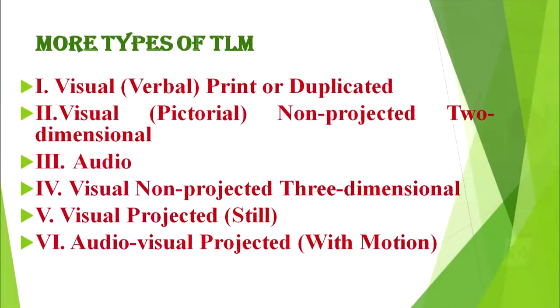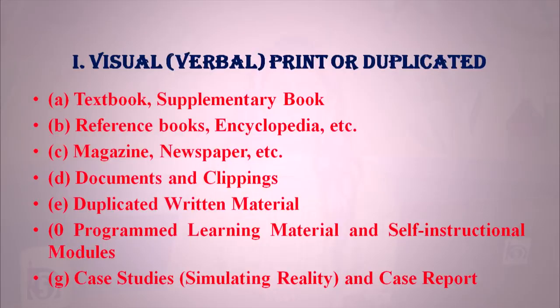There are six types of TLM. First is visual/verbal — print or duplicated; second is visual, pictorial, non-projected, two-dimensional; third is audio; fourth is visual, non-projected, three-dimensional; fifth is visual projective (still); and the last is audio-visual projected (with motion). The first category — visual print or duplicated — includes textbooks, supplementary books, reference books, encyclopedias, magazines, newspapers, documents, clippings, duplicated written material, programmed learning material, self-instructed modules, case studies, and case reports.